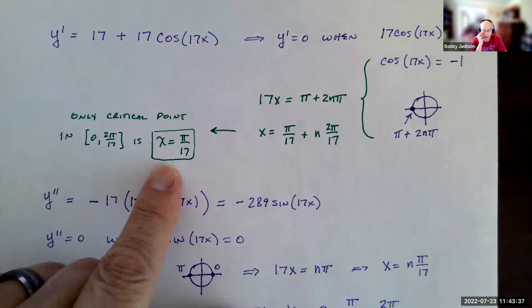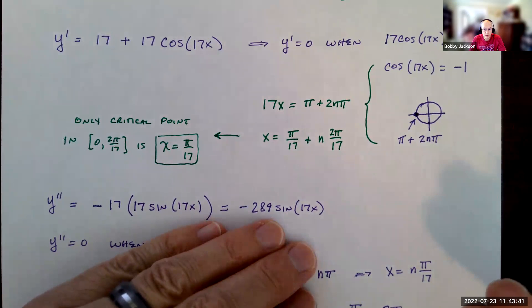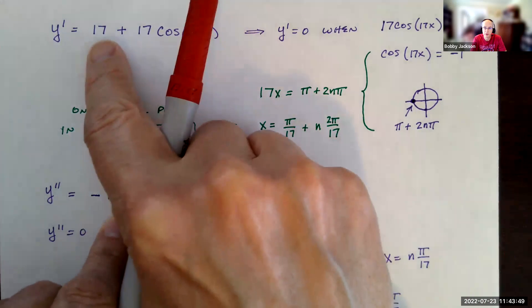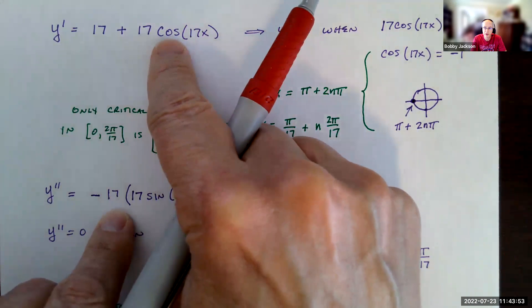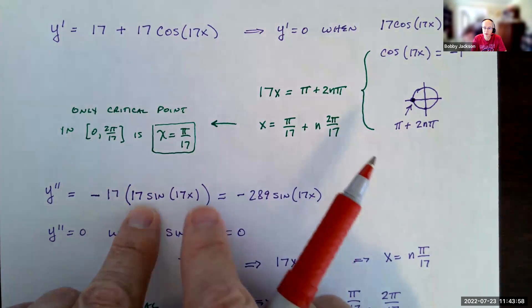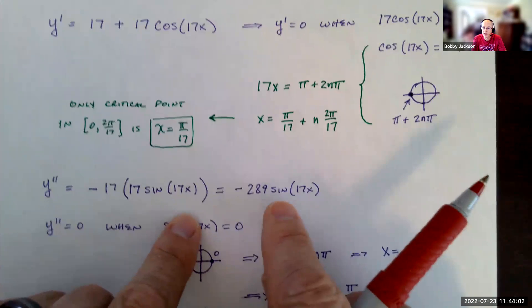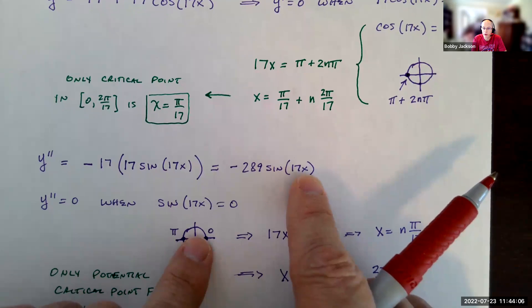Now we want to find where the second derivative is 0 because that's a potential change in concavity, a point of inflection. So let's take the derivative of our derivative. Derivative of 17 is 0. So I've got 17 times the derivative of cosine, which is negative sine, and then I have to multiply by another 17 by the chain rule. So I'm ending up with negative 17 squared here, or 289, sine of 17x.